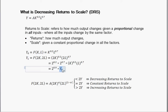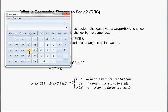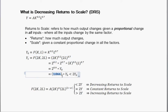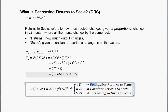So this gives us 2 raised to the 0.9 times our initial level of output. What is 2 raised to the 0.9? It equals 1.866. So we get 1.866 times our initial level of output. Now 1.866 times Y-sub-0 is definitely less than 2 times Y-sub-0. We doubled the inputs and got less than double the initial level of output — so we call this decreasing returns to scale.